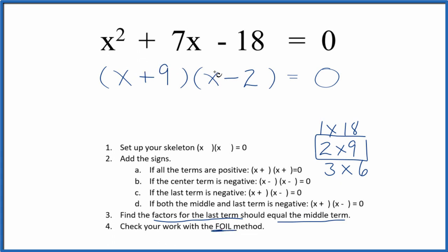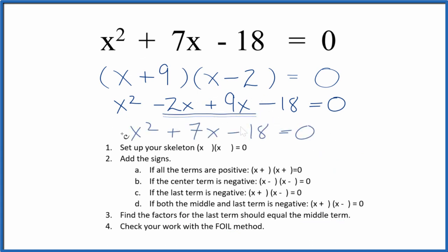We're going to multiply the first terms, the outside, inside, and then last. We end up with x squared minus 2x plus 9x minus 18, and we can combine these two terms here. This is the same thing as we started with here, so we did this part correctly. We correctly factored the equation x squared plus 7x minus 18.